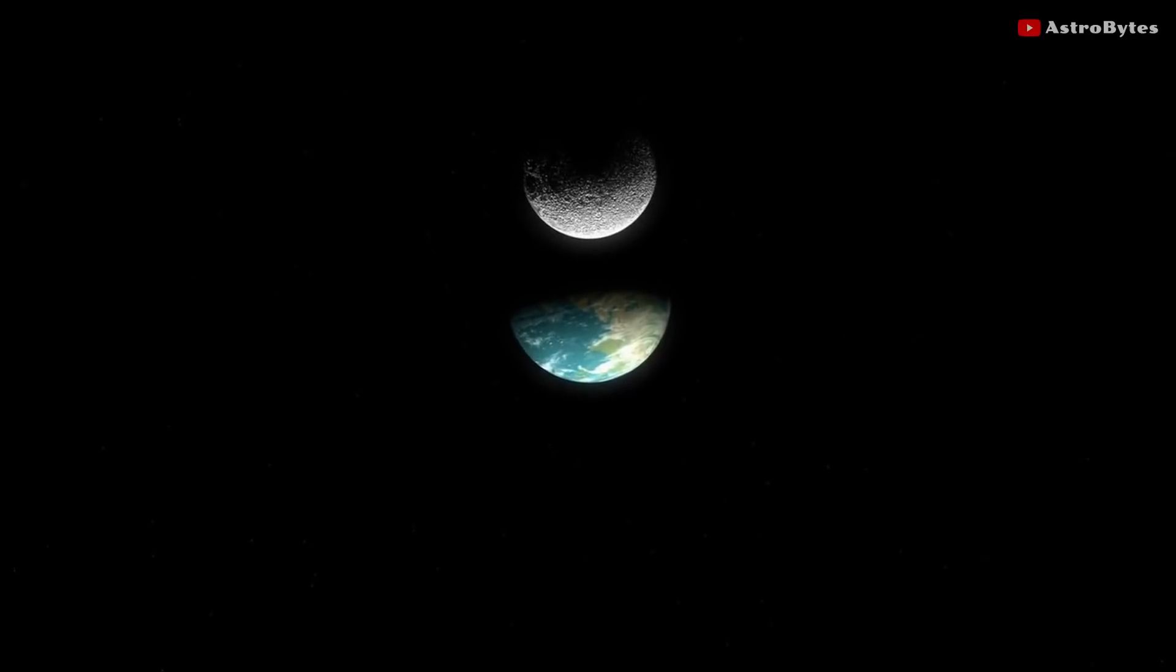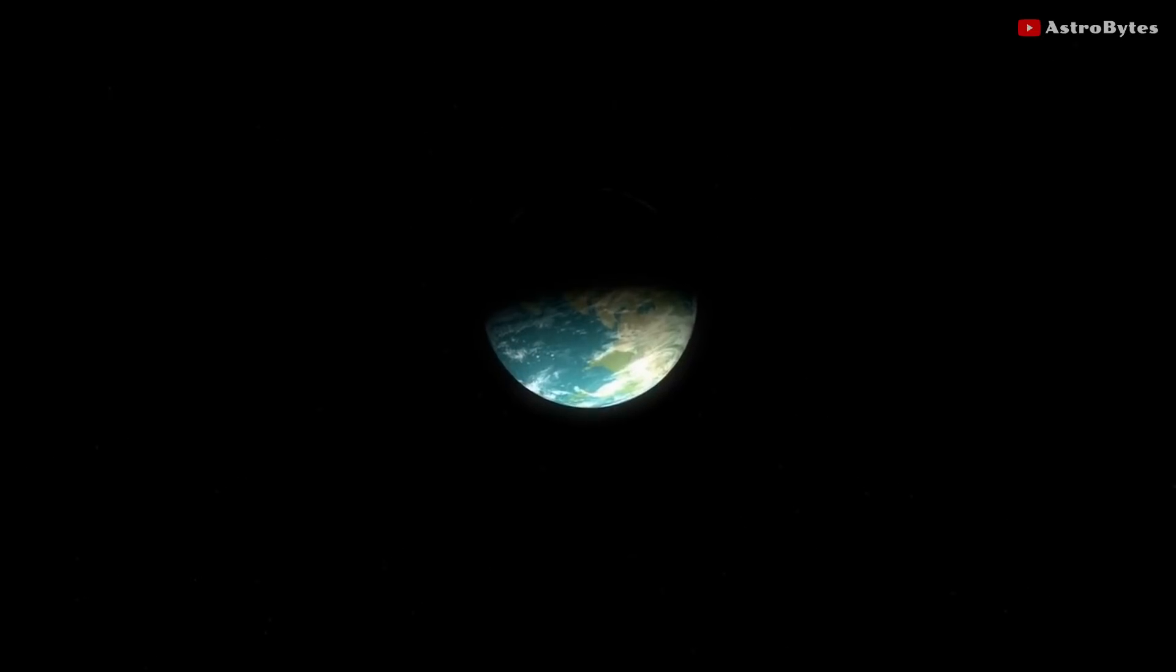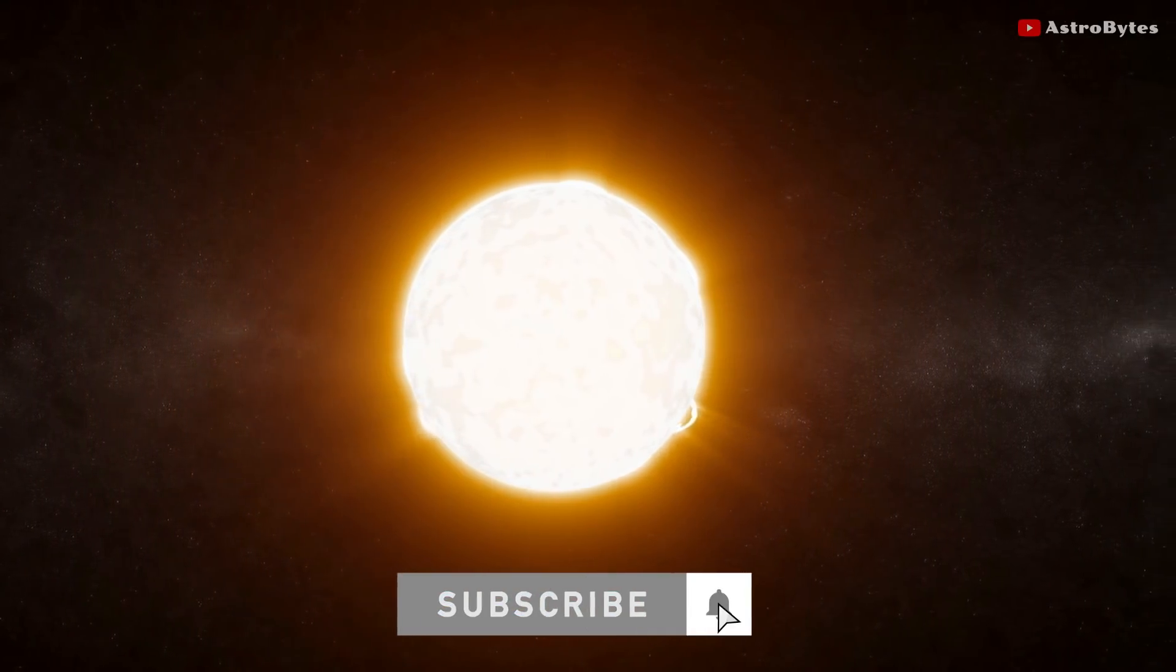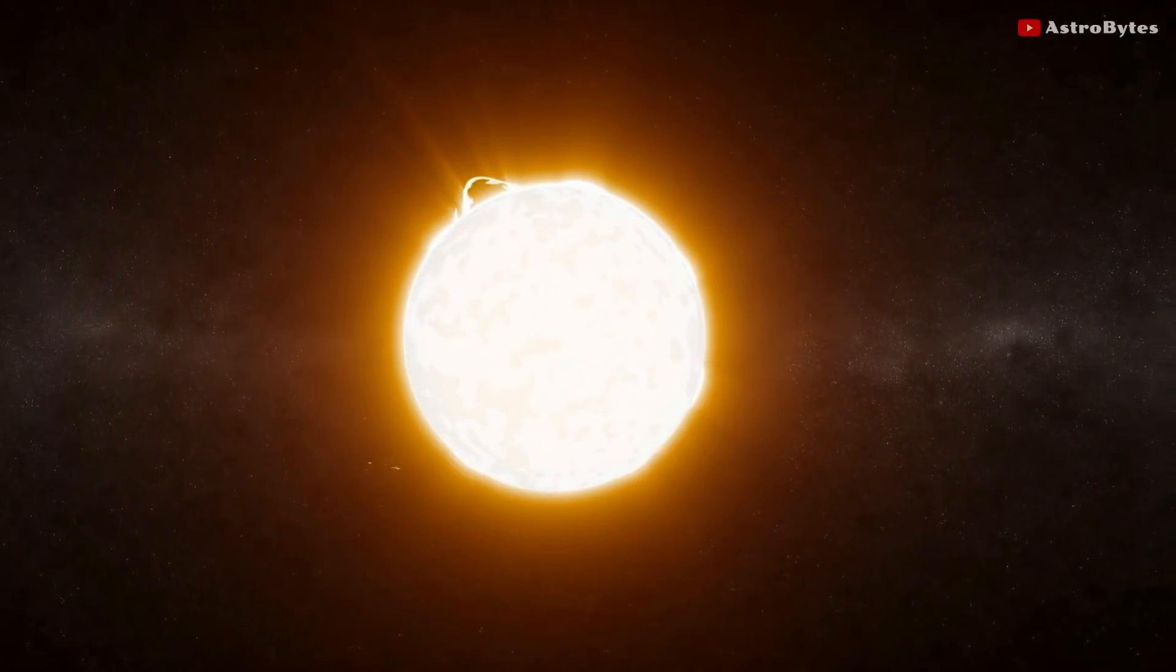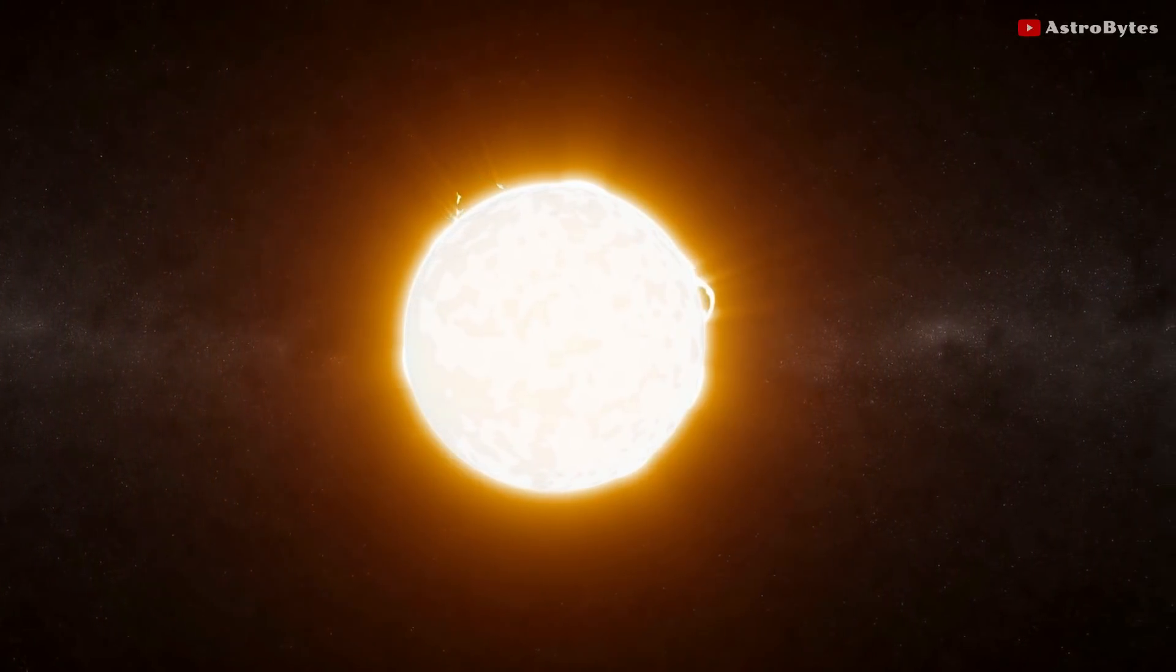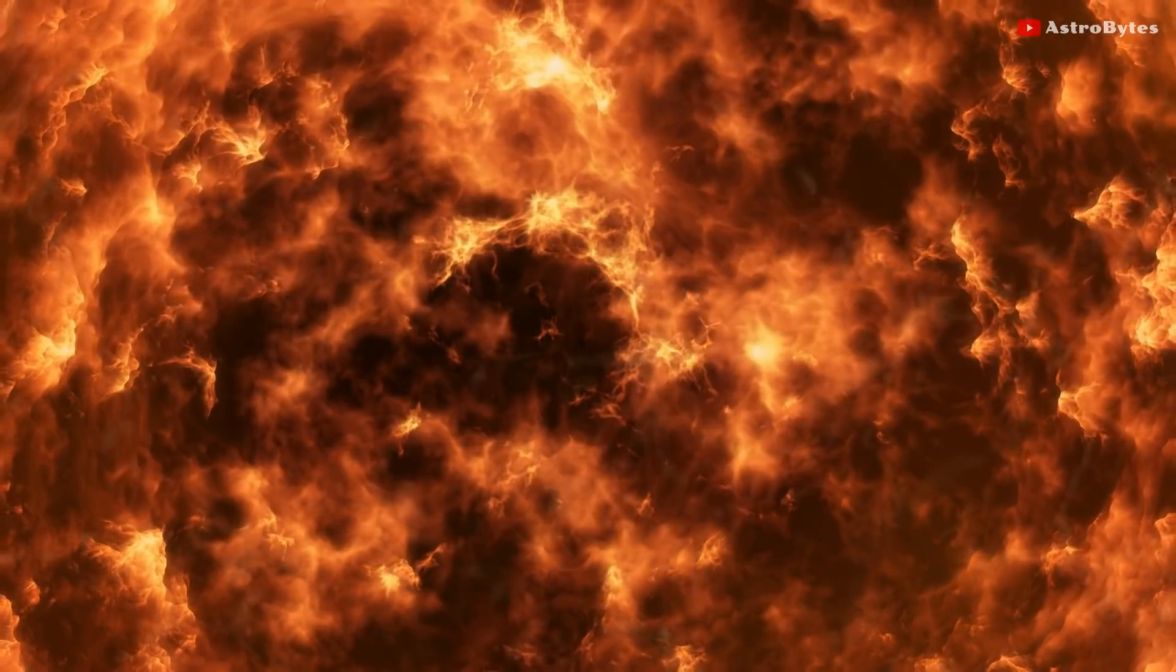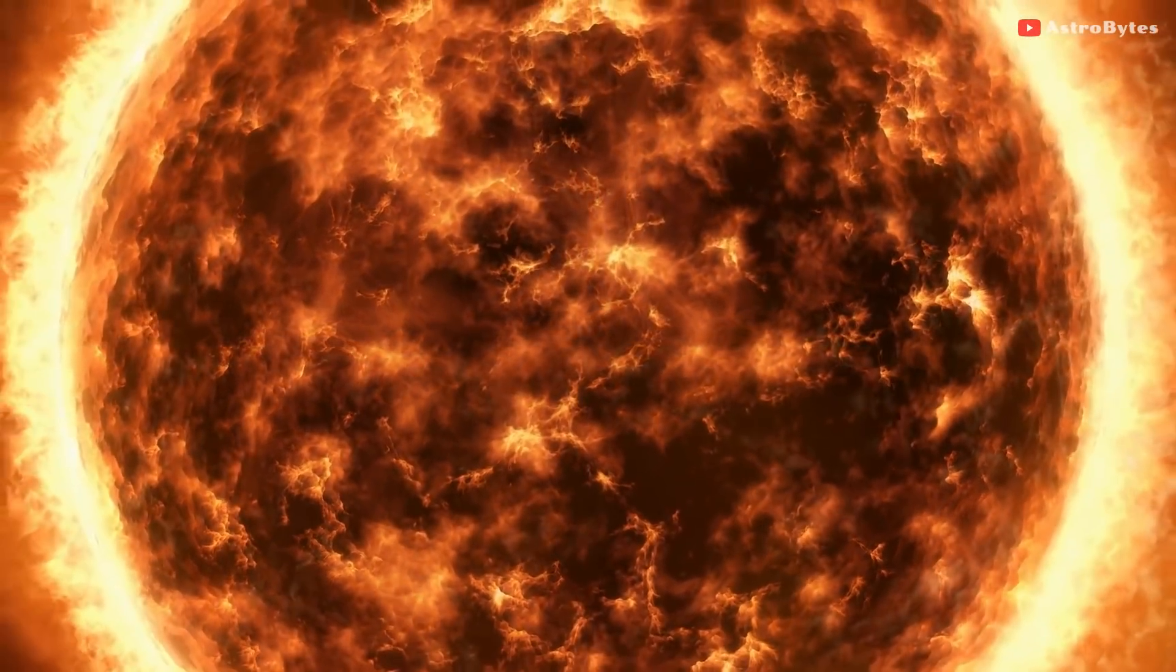HD 84406 is a Sun-like star near the Big Dipper which is about 260 light-years away from Earth. The star has a surface temperature of about 5000 Kelvin, which is about 8540 degrees Fahrenheit.